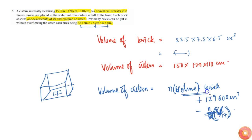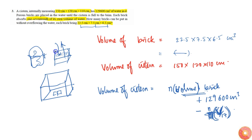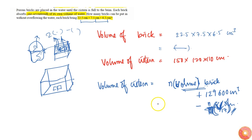The reason we subtract n × V/17 is to avoid double counting. When we add n bricks' volume plus water volume, the portion of the brick filled with water is counted twice — once in the brick volume and once in the water volume. So we subtract that overlapping part, which is n × volume of brick / 17.